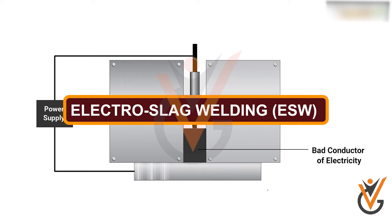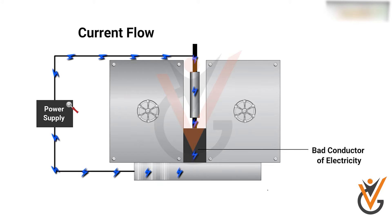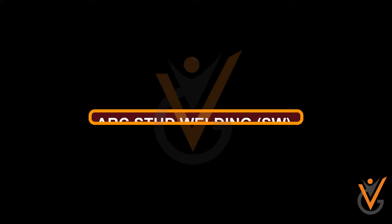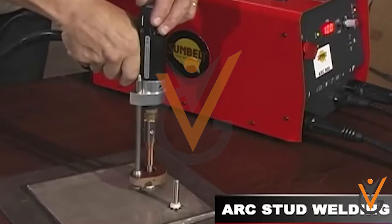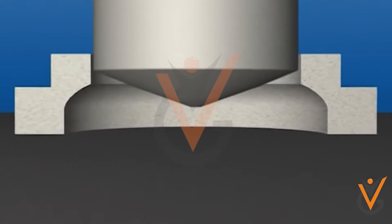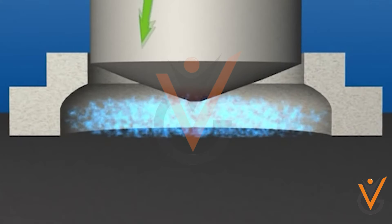Electro Slag Welding (ESW) is a vertical process used to weld thick plates in a single pass. It relies on an electric arc to start before a flux addition extinguishes the arc. Arc Stud Welding (SW), similar to flash welding, joins a nut or fastener, usually with a flange with nubs that melt to create the join, to another metal piece.